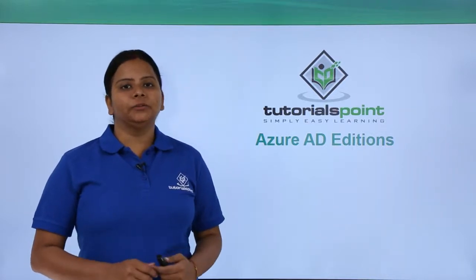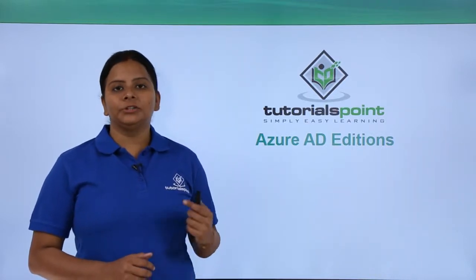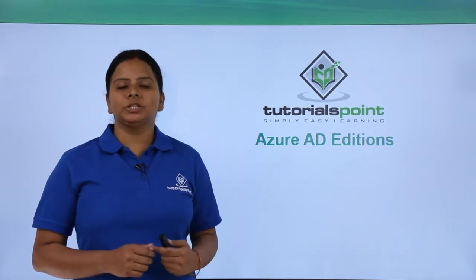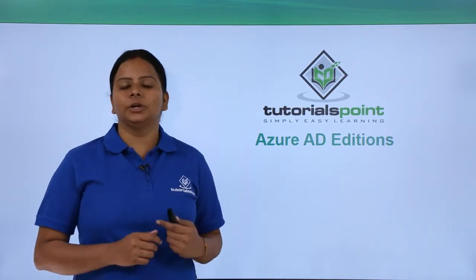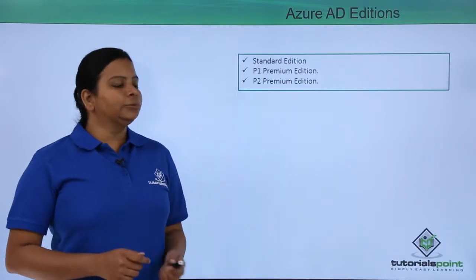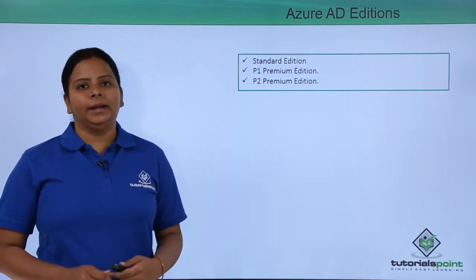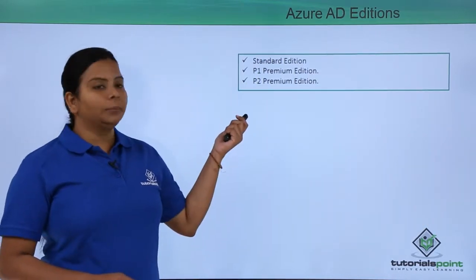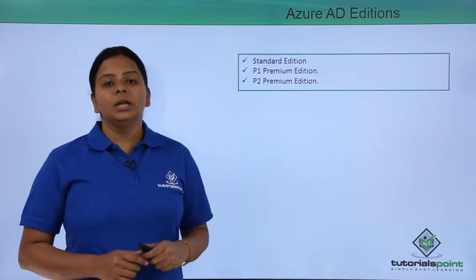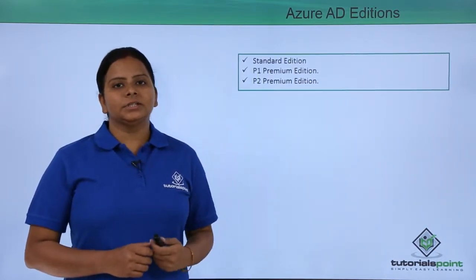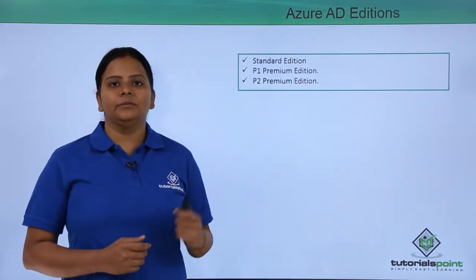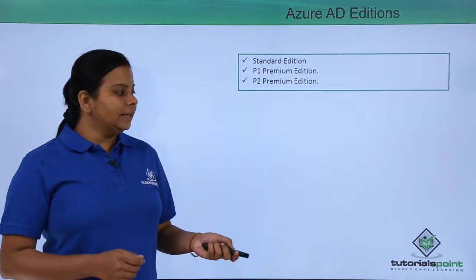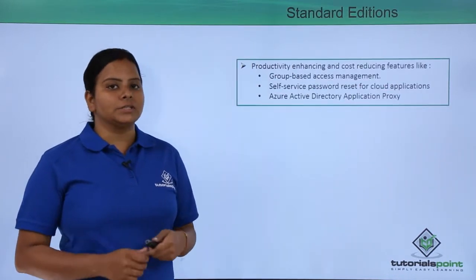In our previous video we talked about Active Directory. Now let us have a look at the Active Directory editions we have in Azure. We have three different types of Active Directory editions: the Standard one, the P1 Premium, and the P2. Let us see what are the differences and what features we have in each of these editions.